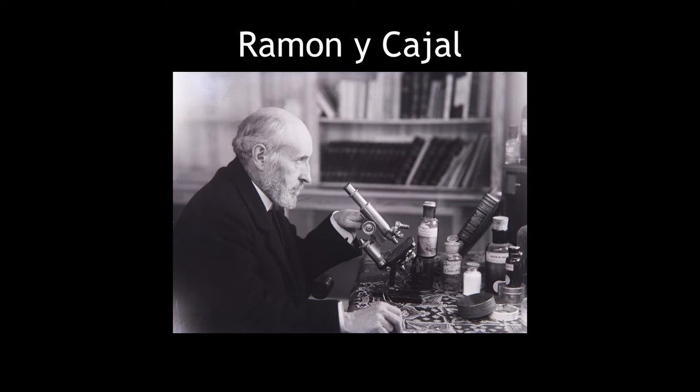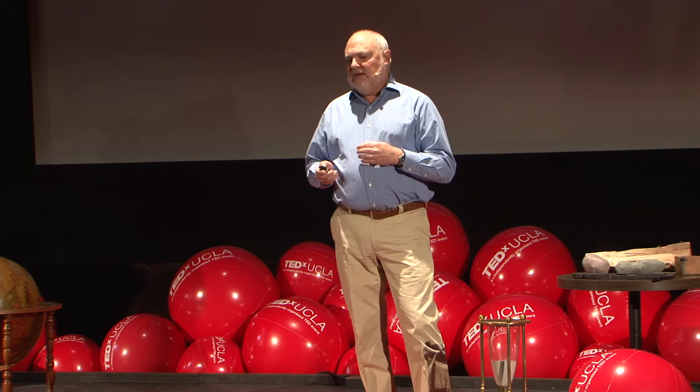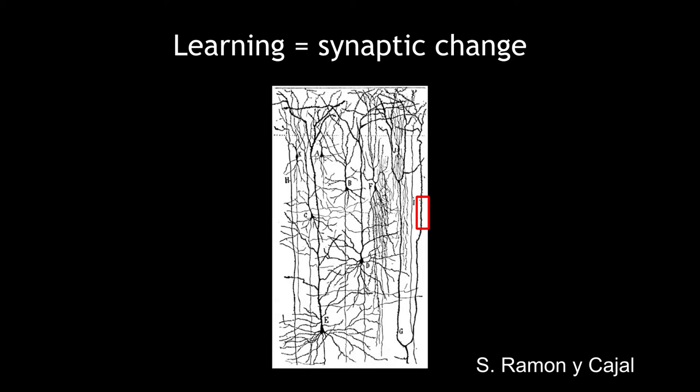The first person to approach this topic was the great Spanish neuroanatomist Ramón y Cajal. Cajal carried out pioneering investigations of the structure of the brain, and in the course of these investigations he became convinced that learning causes changes in the connections between neurons in our brain. Here you see one of Cajal's micrographs of the human cortex, showing neurons.